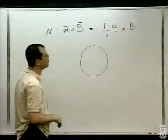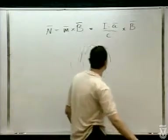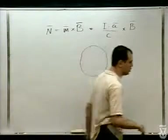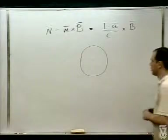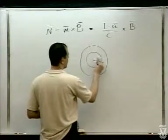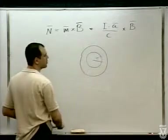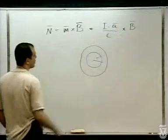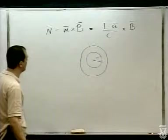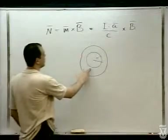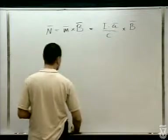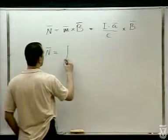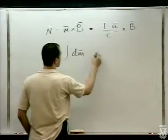אנחנו נחשב את M של כל טבעת בנפרד ונסכום: M = ∫dM × B. עבור טבעת כלשהי ברדיוס R, DM = DI × (πR²)/C. נסכום על תרומת כל טבעת ל-M.